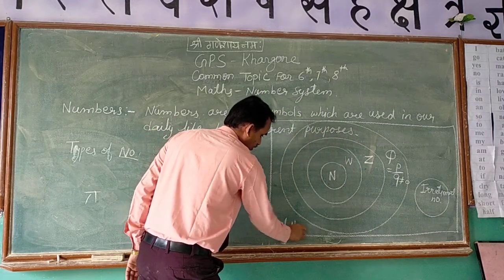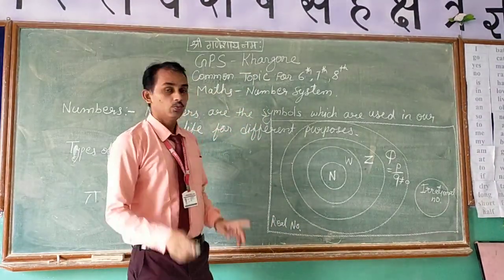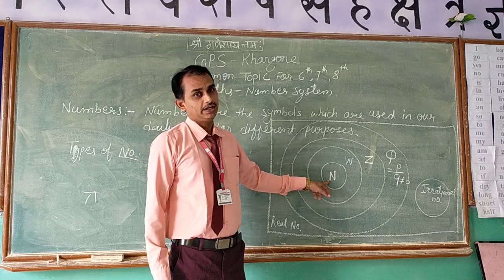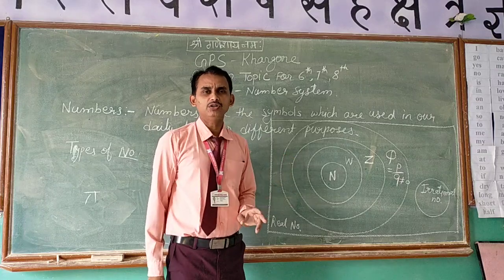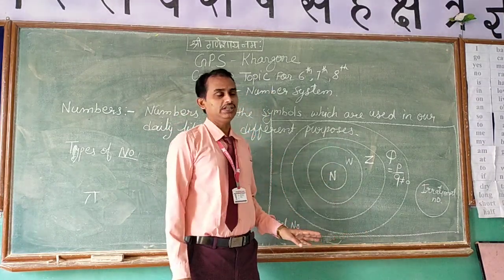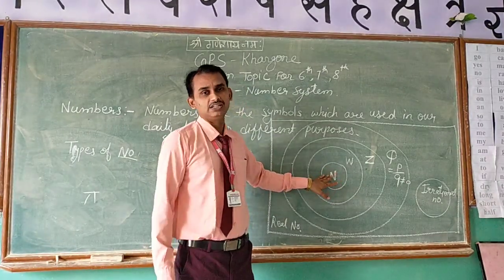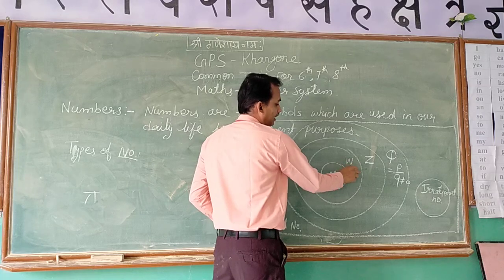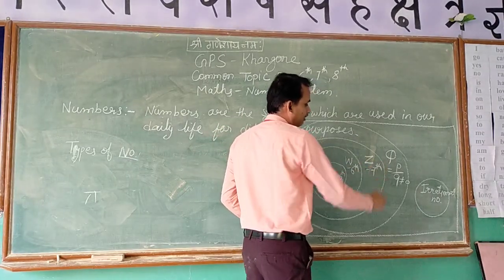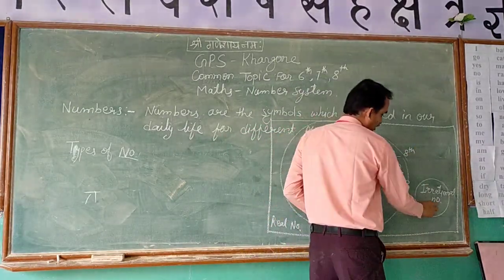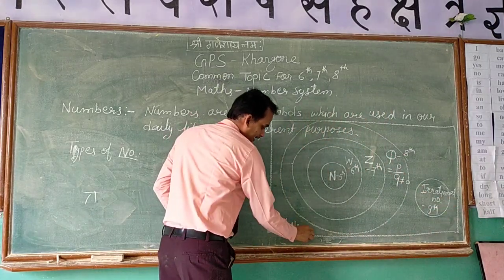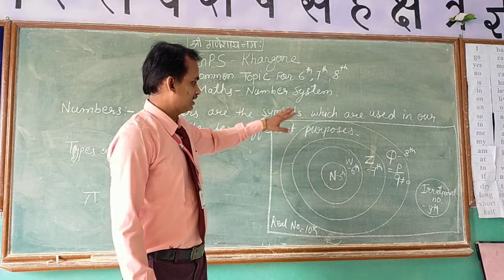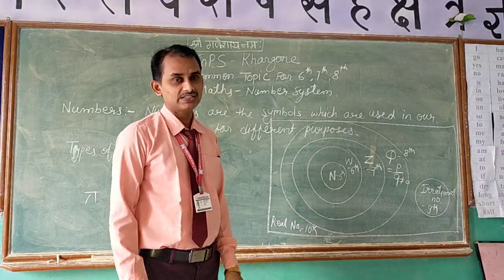These all numbers are known as real numbers. Once again repeating: the first group is natural numbers, taught up to class 5. Then whole numbers in class 6, integers in class 7, rational numbers in class 8, irrational numbers in class 9, and real numbers in class 10. This is the pattern made by NCERT and CBSE books used in your textbook.